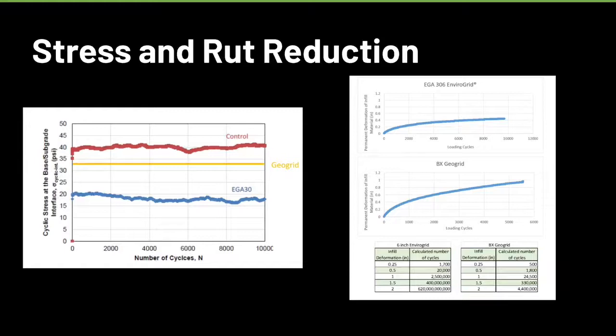We talked about the stress reduction. The test that we did recently on the left here, you can see the control section is that red line at the top. That's the stress at the interface between the subgrade and the top layer. And then the blue line at the bottom is EnviroGrid. We see that there was a 50% reduction in the stress at the subgrade level by using EnviroGrid. Same test ran with BioxioGrid came up with about an 18% to 20% reduction in stress.